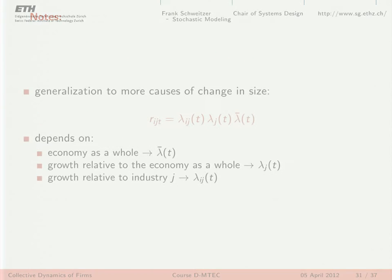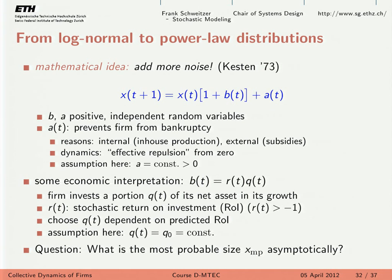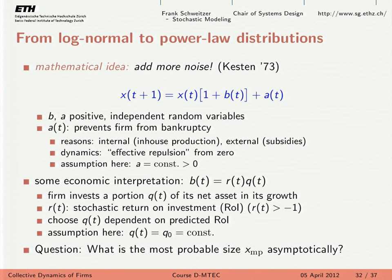The very last point: you can extend the dynamics by an additional term A — a constant or random but positive contribution towards your growth. This is your own wealth dynamics, analogous to the amount of money your parents send you every month independent of your grades — a Kesten-type process with an additive term.